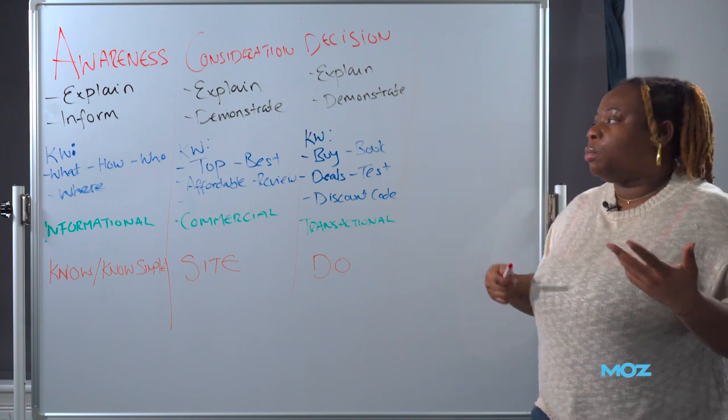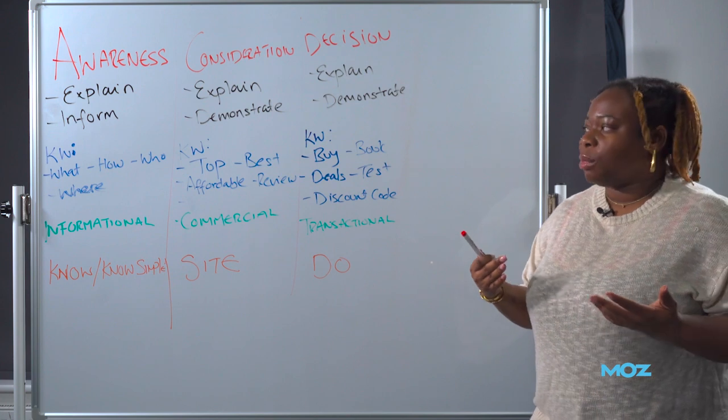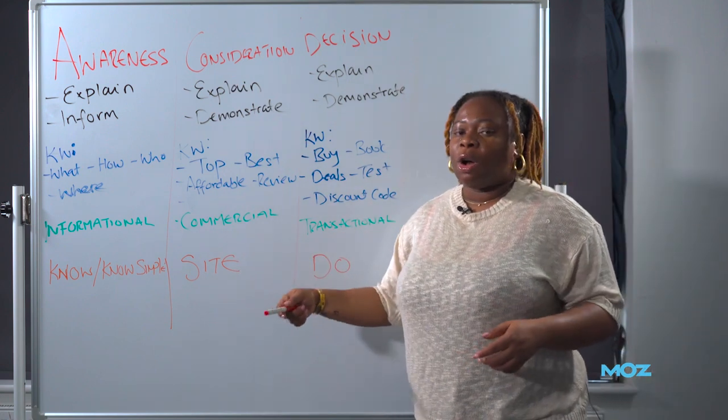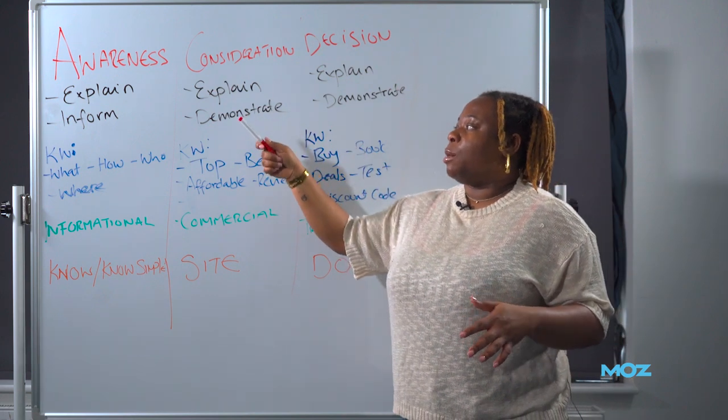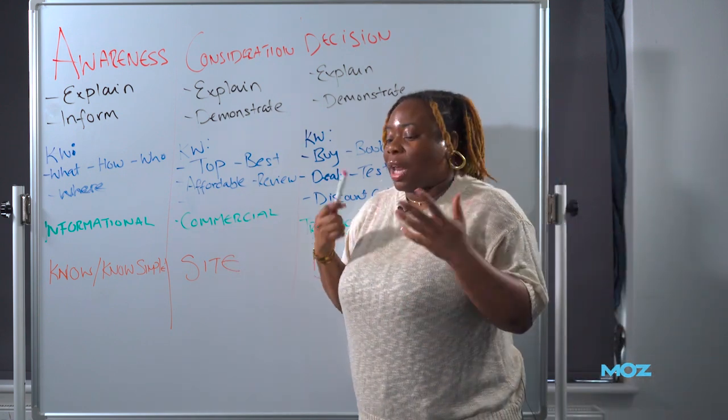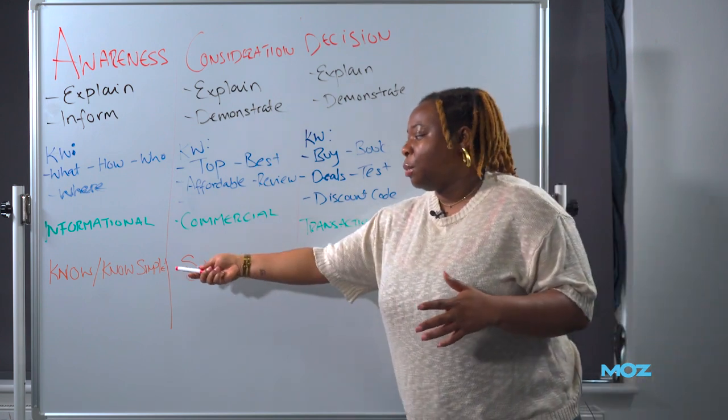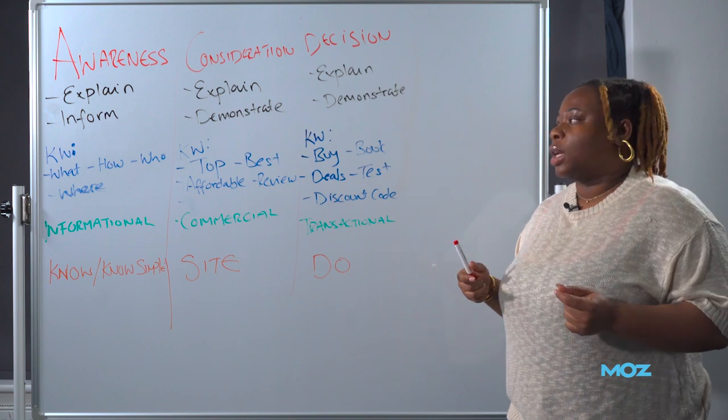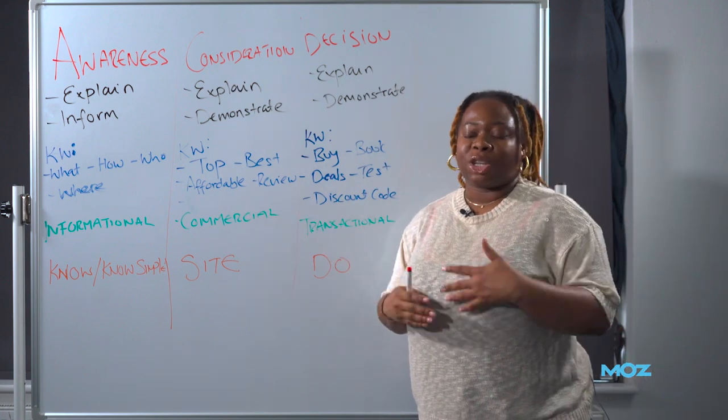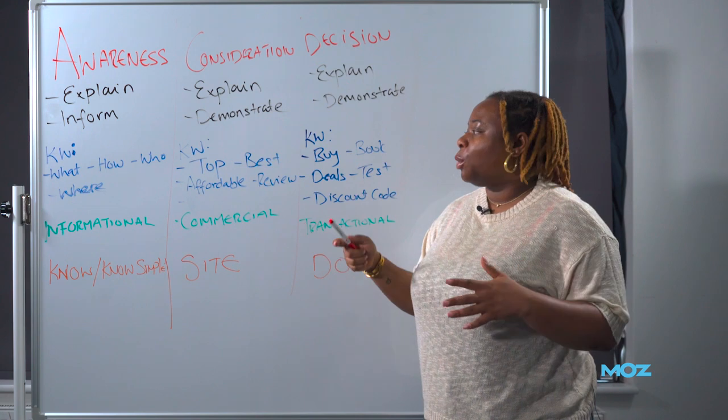But furthermore, the intent behind it would be informational because we all know informational keywords are utilized when users want to be informed about something, again going back to the purpose of awareness. Now we don't necessarily always talk about the goal. Of course, we definitely know that awareness brings about explaining, brings about the informational intent behind it. But if you want to talk about the goals in which the user wants, we can classify it as Know and Know Simple. So Know just means your users are trying to know an information. Know Simple would be those queries that they want the answers quickly, like what is Beyonce's age? That would be a Know Simple query because Google will just bring up her actual age without the user having to go into any website to look at that. So that is awareness.